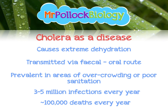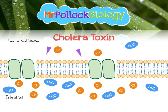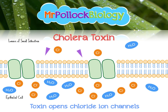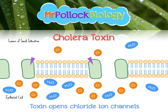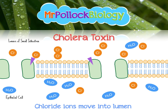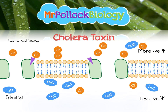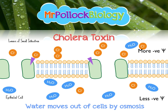How does cholera cause disease? Cholera releases a toxin, and it acts in the lumen of the small intestines, or on the epithelial cells of the small intestines. On the diagram, we have chloride ions, the cholera toxin, and H₂O. The cholera toxin causes chloride ion channels to open, so chloride ions rush out from the epithelial cells into the lumen of the small intestine. This makes the water potential of the lumen significantly more negative than the water potential of the epithelial cells. Therefore, water moves out from the epithelial cells into the lumen of the small intestine via osmosis.